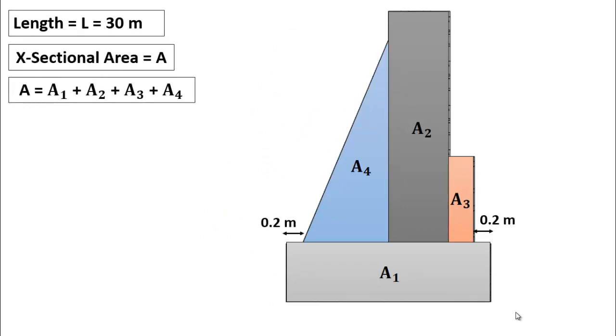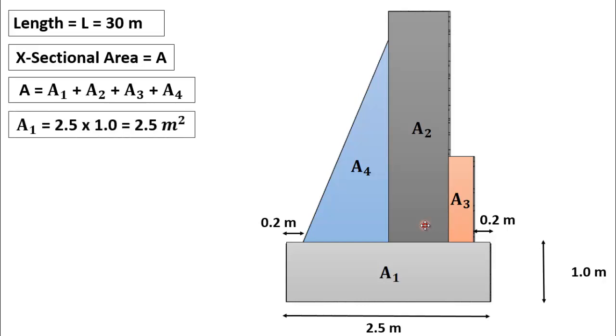So the total cross-sectional area of the figure will be equal to sum of the cross-sectional areas of all figures. That is A1, A2, A3 and A4. Now we will find area of each regular figure. For A1, we know that the dimensions are 2.5 meter by 1 meter. So the cross-sectional area will be equal to 2.5 multiplied by 1 which is equal to 2.5 square meter.